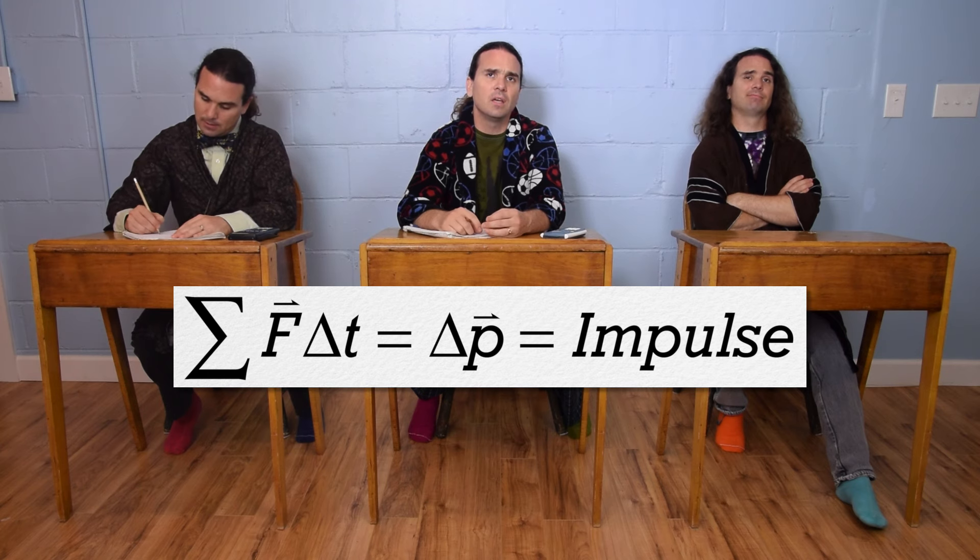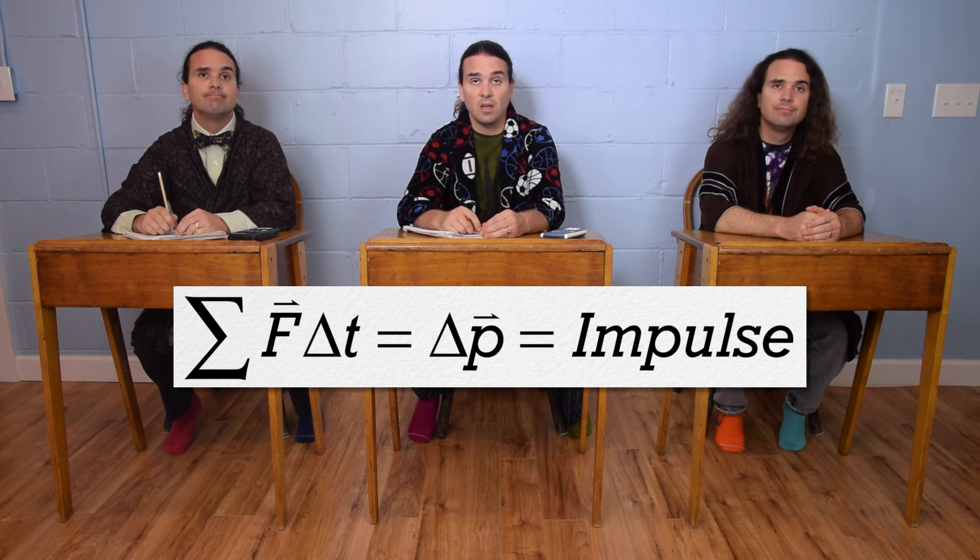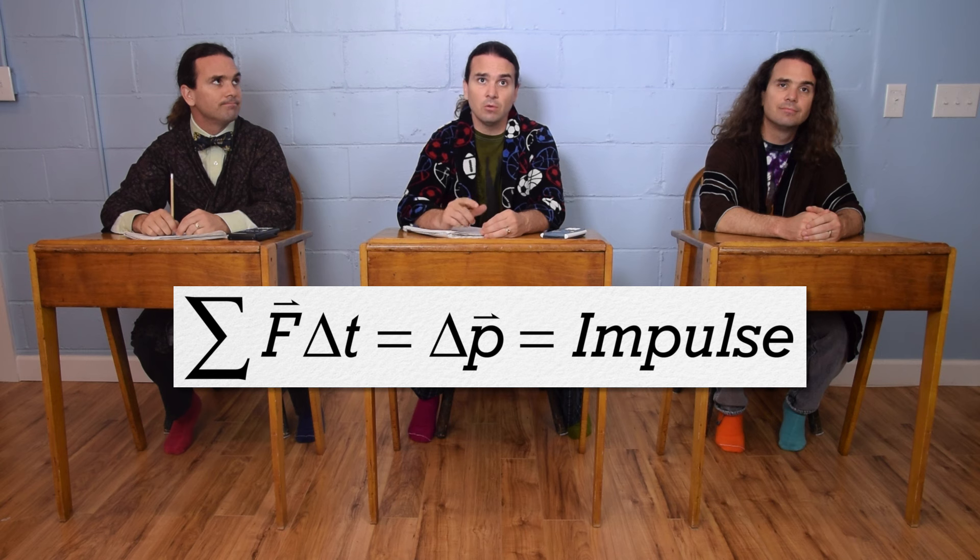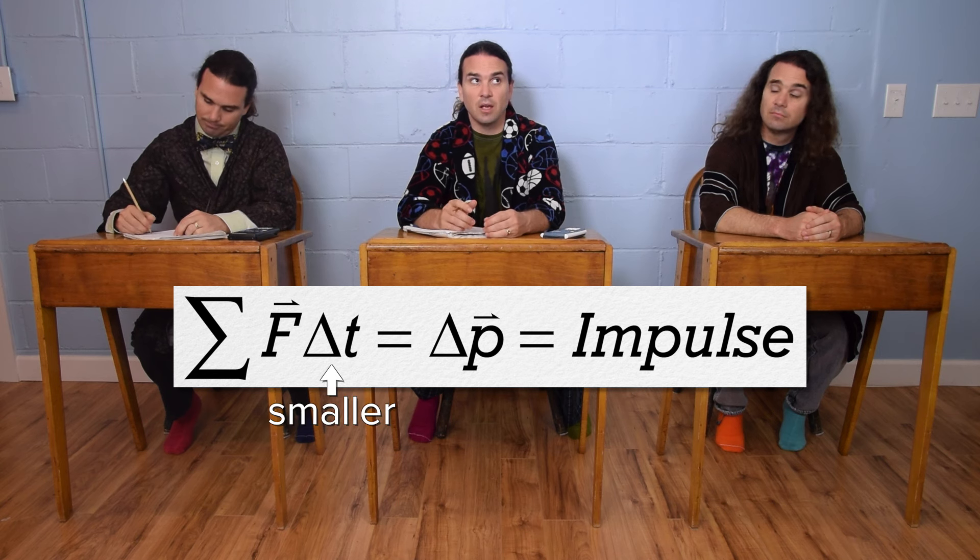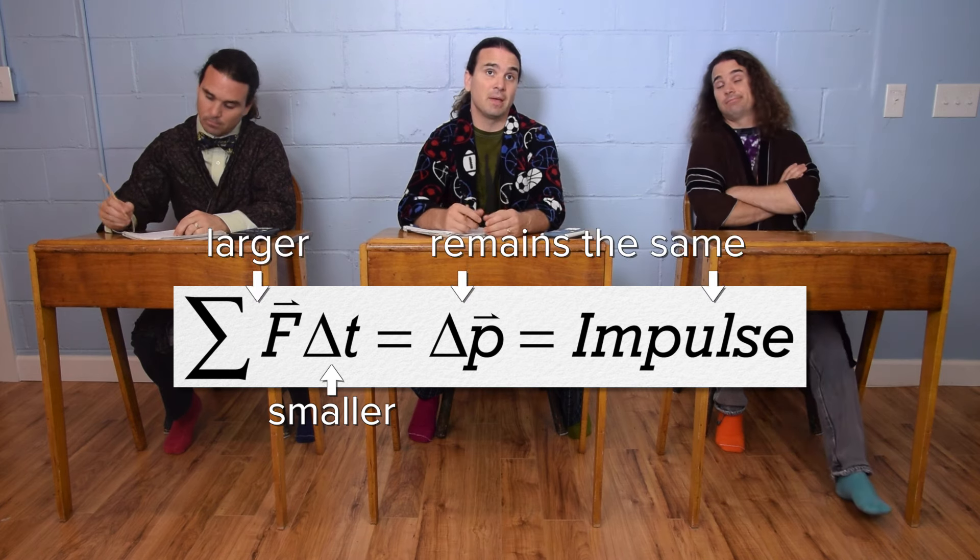Well, we already identified that the only variable which is different is the change in time. So, if you don't bend your knees, the change in time will be smaller, and therefore the net force will be larger, even though the impulse remains the same.